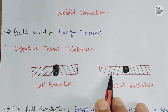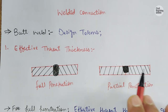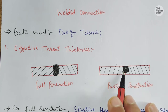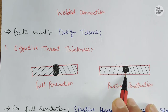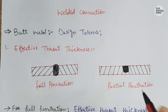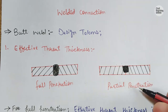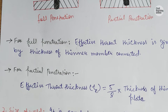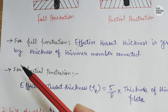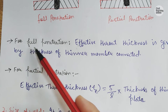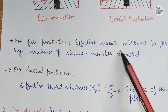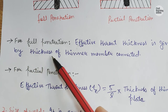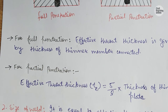In partial penetration, we have two plates joined head to head, but the weld does not go through the full thickness of the plate — only partially. So the effective throat thickness depends on the penetration condition. For full penetration, effective throat thickness is given by the thickness of the thinner plate connected.